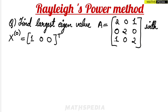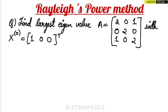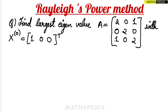In this video we are going to learn Rayleigh's Power Method. This method is used to find out the largest eigenvalue and the corresponding largest eigenvector. They will give you one A matrix — it will be a square matrix, it can be 2x2, 3x3, 4x4. Here I have taken a 3x3 matrix.